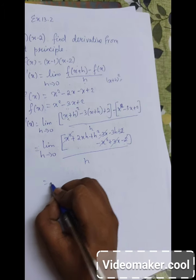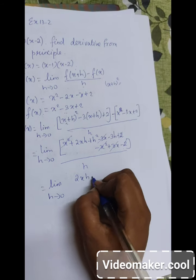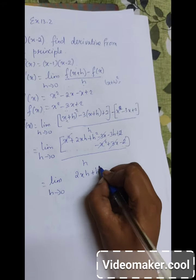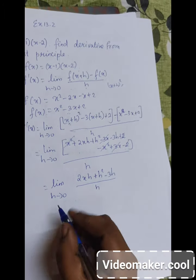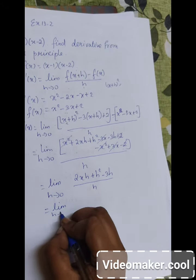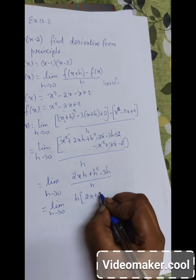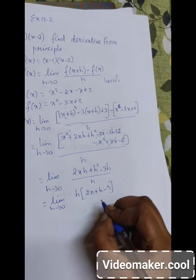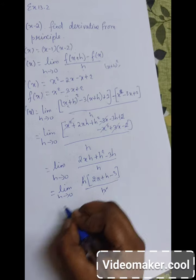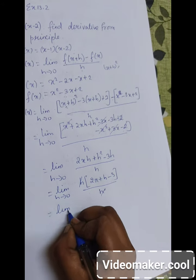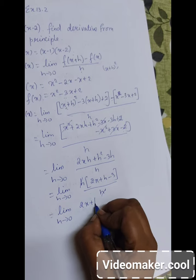So we will have limit h tends to 0 of 2xh plus h squared minus 3h, all divided by h. Since h is common in both numerator and denominator, we can take it out and cancel, leaving us with 2x plus h minus 3.